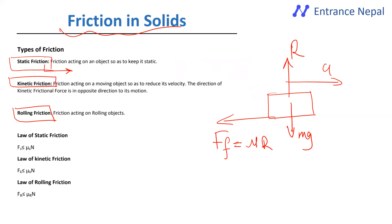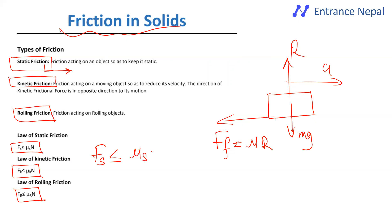The normal reaction is R. The frictional force equals μ times the normal reaction (f = μR), where μ can be the coefficient of static, kinetic, rolling, or sliding friction. The frictional force must be less than or equal to μ times the normal reaction.